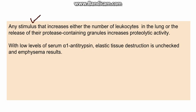When alpha-1 antitrypsin is decreased, any infection or stimulus leads to increased leukocytes in the lung. Increased neutrophils result in increased protease-containing granules and increased proteolytic activity, increasing elastase levels, which destroys elastic tissue. If alpha-1 antitrypsin is at normal levels, it inhibits the elastase enzyme and emphysema does not develop.